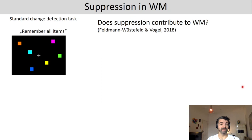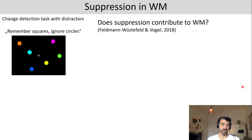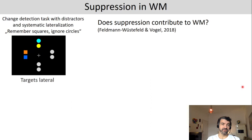So far we've talked about enhancement in working memory — how relevant information is more strongly represented and the visual system tries to maintain it. But just like for attention, suppression also plays an important role in working memory. This has been tested in a revised change detection task by myself and Ed Vogel, in which you have not only relevant items (squares) but also distractors (circles).